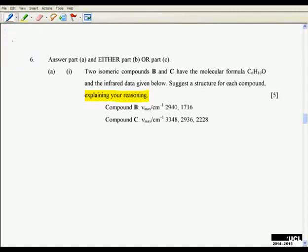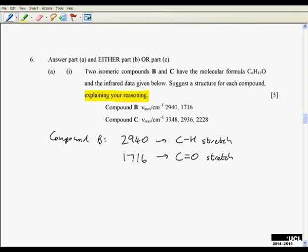For compound B, we need to say what each of these stretching frequencies corresponds to. 2940 is a C-H stretch. 1716 is a C=O double bond stretch, and it's typically the stretch of a ketone.